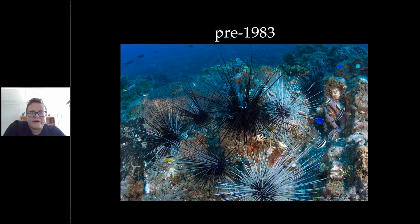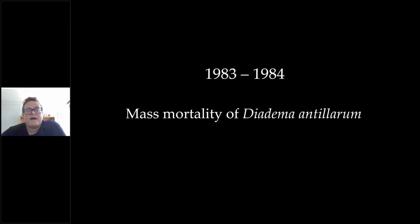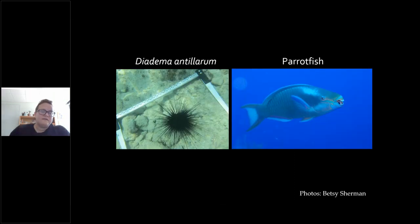Before 1983, there were urchins that covered the reefs and grazed on the macroalgae, keeping it in check so it didn't overgrow the reef and suffocate it. In 1983 to 1984, there was a mass mortality event — a disease that killed off more than 99% of the urchins, which left things in trouble because they were the primary grazers of algae in the reefs. Herbivorous fish, and in particular the parrotfish, became the most dominant grazers on reefs.